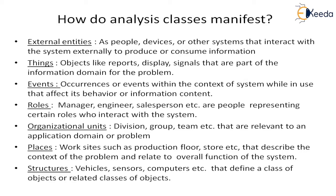Then there are things which are objects — like reports, display signals, or anything that is part of the information domain for the problem. When we come across such words in the problem statement or requirement specification, we can consider them as potential analysis classes. Similarly, events — occurrences within the context of the system that affect its behavior or information content. Whenever an event occurs, the state will change and the system's behavior or information content will change, so these are also potential analysis classes.